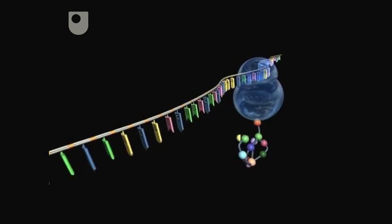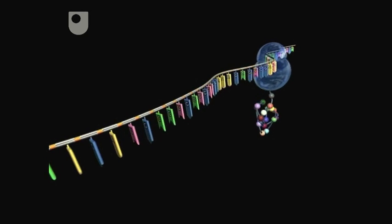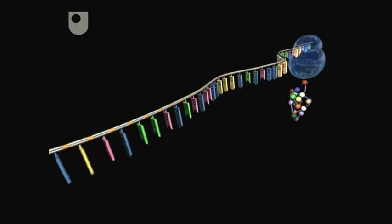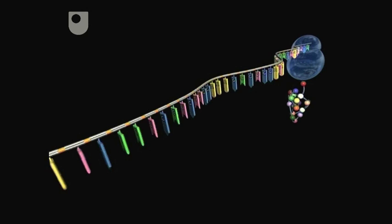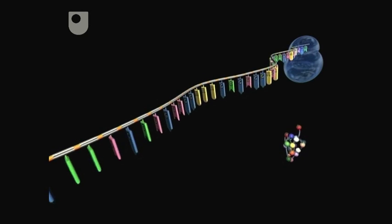This requires the transfer RNA adapter molecules, omitted here for simplicity. The process continues until the ribosome reaches a stop signal in the message, again denoted by a specific set of bases. The completed polypeptide chain is released.